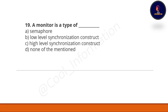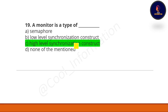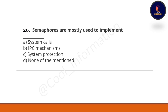Question 19: a monitor is a type of — Option A: semaphore. Option B: low-level synchronization construct. Option C: high-level synchronization construct. Option D: none. The correct option is C — high-level synchronization construct.